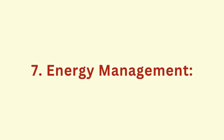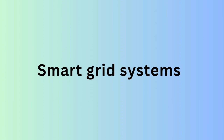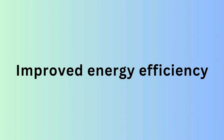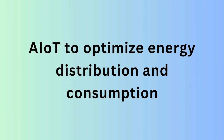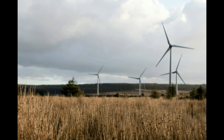Energy Management — Smart Grid Systems. Smart grid systems use AIoT to optimize energy distribution and consumption. Sensors in the grid monitor demand and supply, while AI algorithms adjust energy flow for efficiency. Advantages include improved energy efficiency, reduced wastage, and better integration of renewable energy resources.